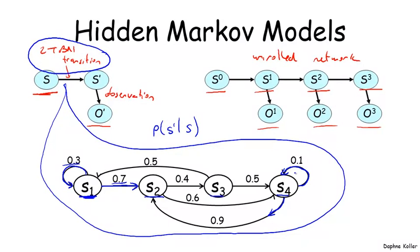So here the structure is actually a sparsity in the transition model, as opposed to something that manifests at the level of the 2TBN structure, which is actually fairly simple.